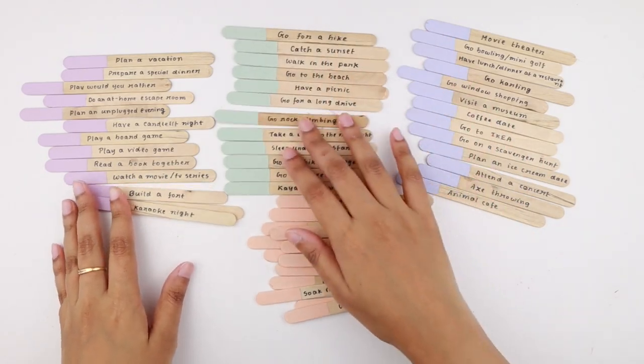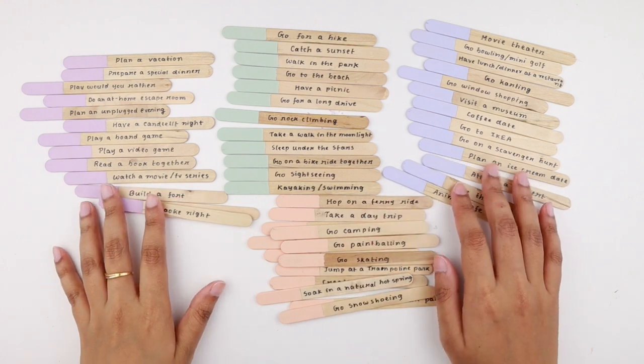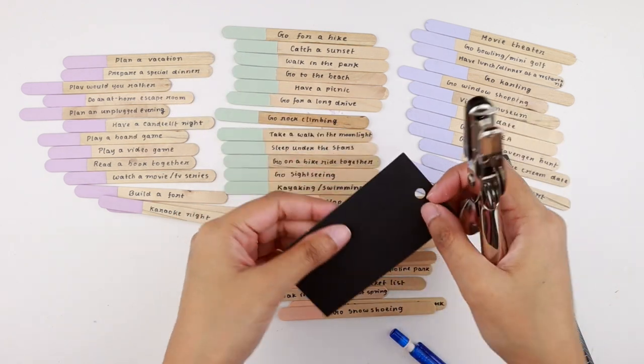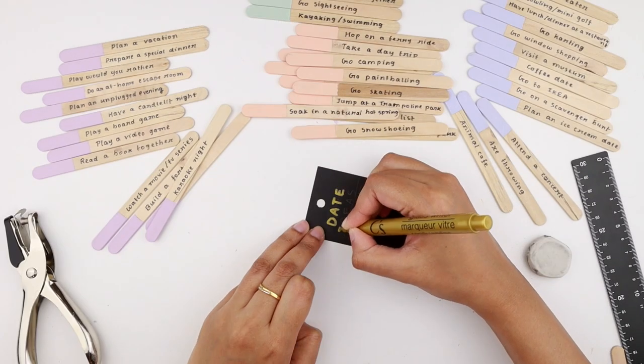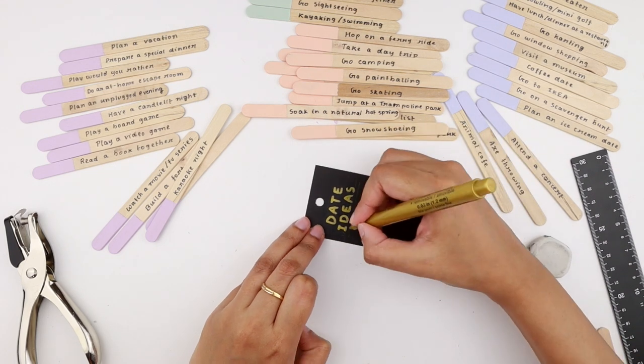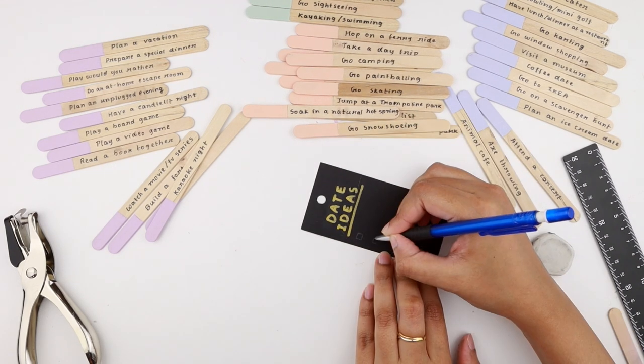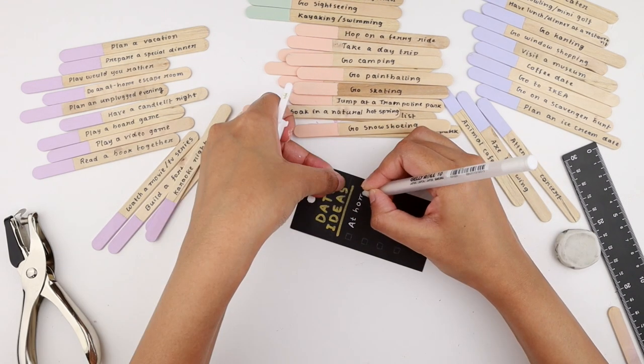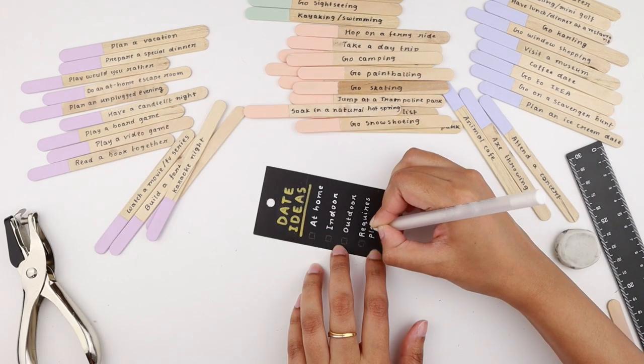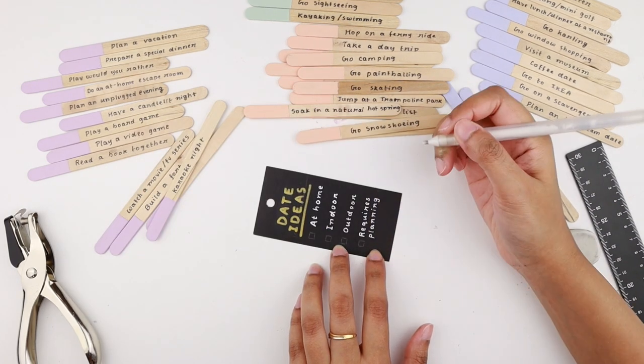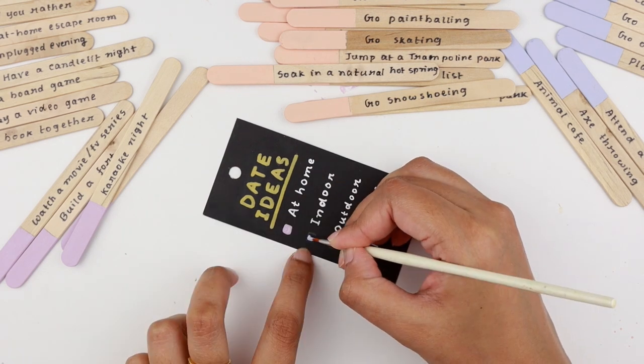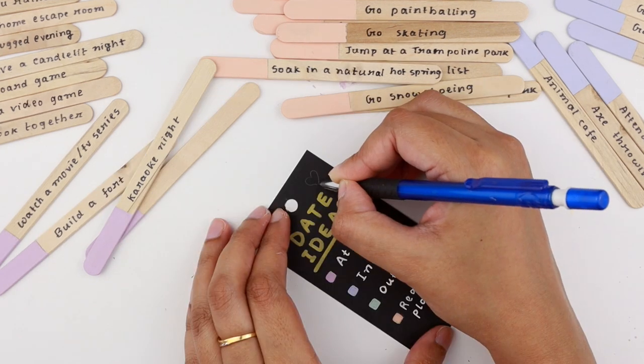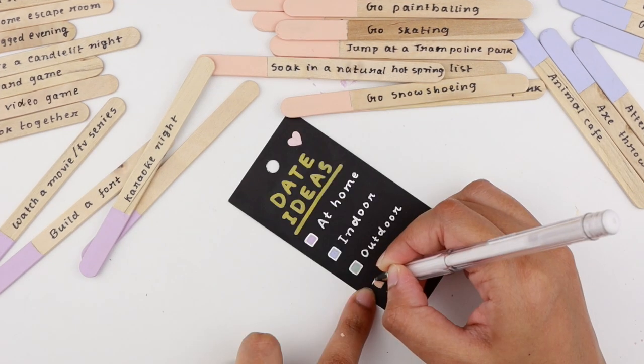I put together a list of date ideas I liked. You can totally customize it to your liking. Then I cut out a rectangular piece of black cardstock and punched a hole on its top. Using a gold marker, I wrote 'date ideas'. Then I drew four tiny squares which I was going to fill in later. Using a white gel pen, I wrote down all the four categories. Then I painted the squares to color code everything. For the finishing touches, I painted a little heart on the top and outlined the squares with a white pen.